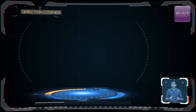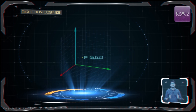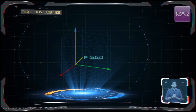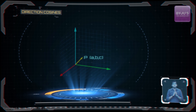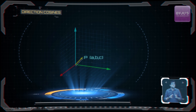We need coordinates A, B, C to describe the position of a unique point P in 3D space. Connecting the origin to this point, the line segment OP is called the position vector of point P with respect to the origin. Along with the position of point P, this position vector describes a unique direction in space, directed along the line segment OP.